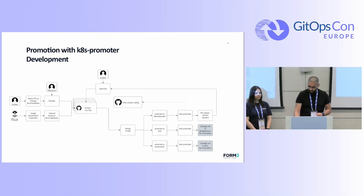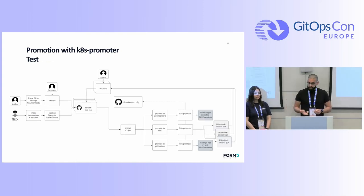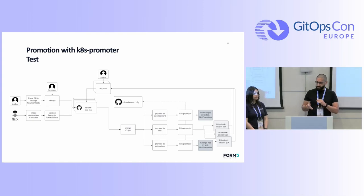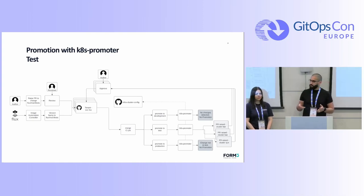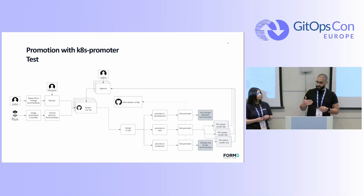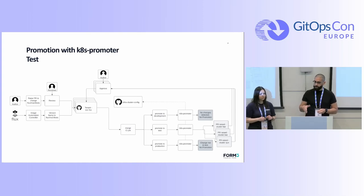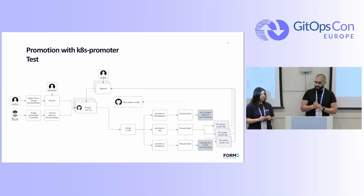Once the dev PR has been raised and merged, it triggers another CI job with the three tasks again. Since the change has now been done in development, promote dev won't do anything. However, for the test clusters — as we have a requirement to conduct changes one by one in that environment — it will raise individual PRs, and the author has to merge them one by one. This repeats for production once all of those changes have been rolled out to test. If only one test cluster had been merged, it wouldn't raise the production PR until it observed the changes across the whole state given the infrastructure cluster config.